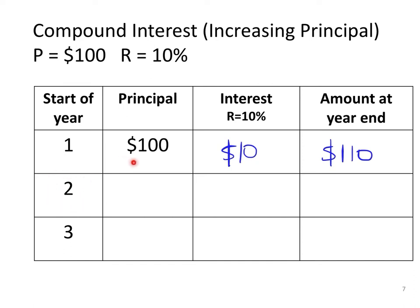At the beginning of the second year, the principal will no longer be $100 — it will be $110, the sum of the principal and the interest from the first year. In the second year, the interest will be 110 multiplied by 10%, which equals $11. You can see that this interest in the second year is more than that in the first year by $1.